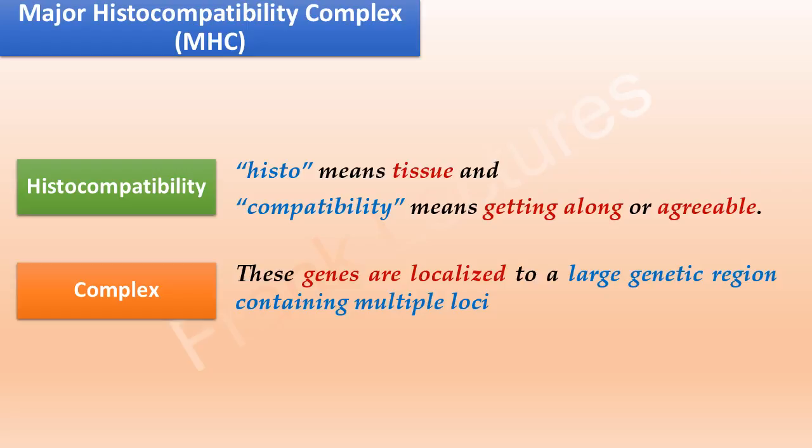Since the molecules encoded by these genes were found to have the main effects on histocompatibility, to distinguish them from other molecules encoded by the genome having minor effects on histocompatibility, they were called major histocompatibility molecules. The genes encoding these molecules were called the major histocompatibility complex.